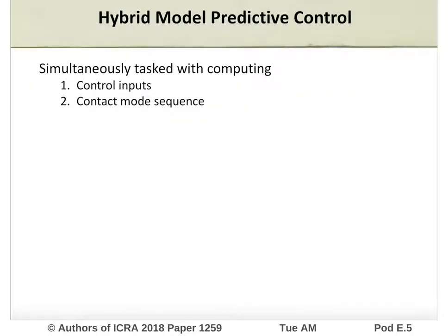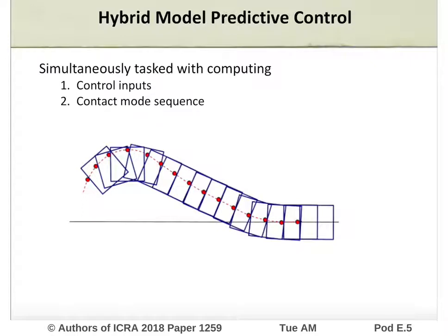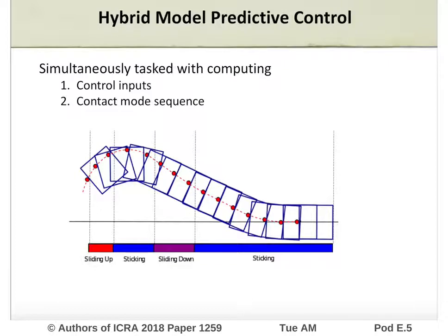In the past, we have shown that closed-loop control of pushing tasks can be formulated using hybrid MPC. This approach aims to minimize the error between an object and a desired trajectory over a finite horizon by simultaneously computing the optimal control sequence required to track the desired trajectory, along with a contact mode sequence that must be enforced during the horizon. This formulation has been successfully implemented in simulated environments, but is too slow for real-time execution due to the non-convex nature of the resulting mixed integer program.